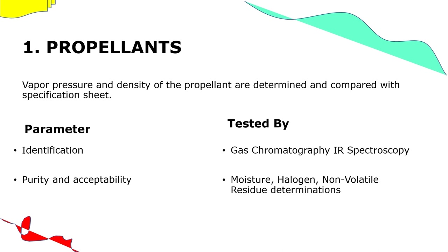Propellants: vapor pressure and density are determined and compared with the specification sheet. Identification is tested by gas chromatography and IR spectroscopy. Purity and acceptability can be tested by moisture, halogen, and non-volatile residue determinations.